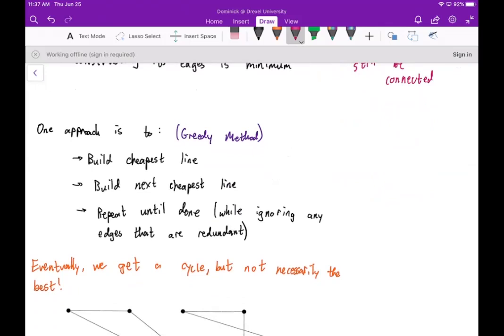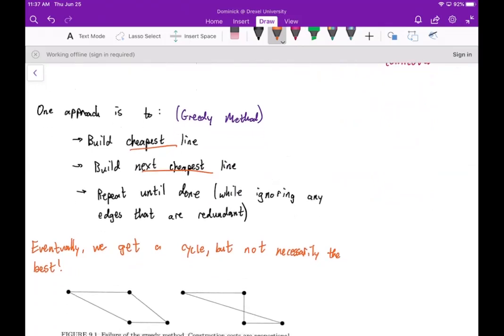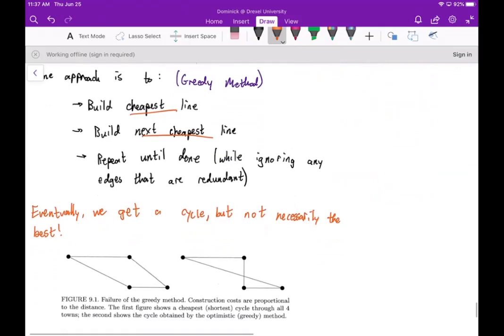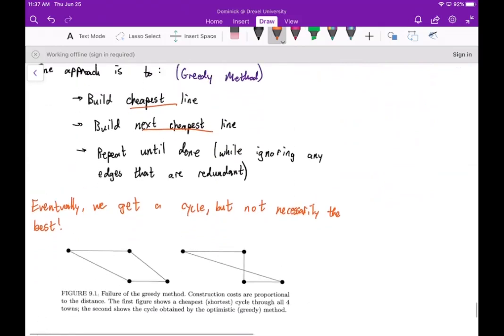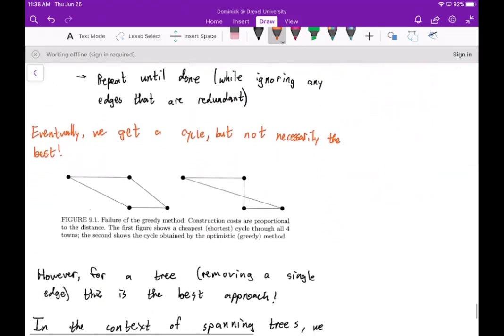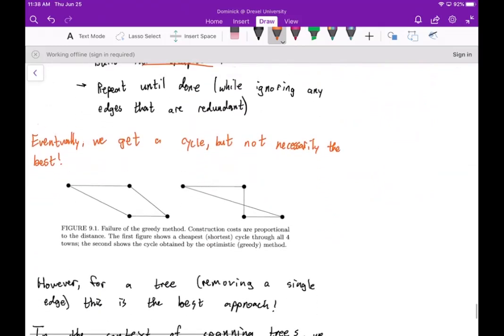Now one approach is what we're going to refer to as the greedy method. We're going to build the cheapest line, then build the next cheapest line, and we're going to keep doing this until we're done. And of course along the way you would ignore any edges that are redundant.